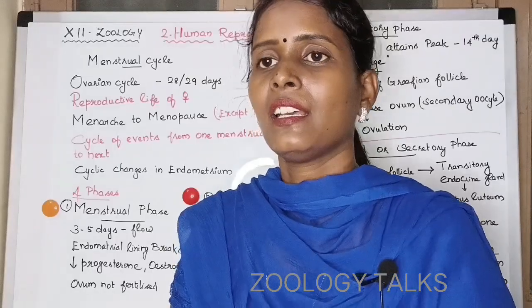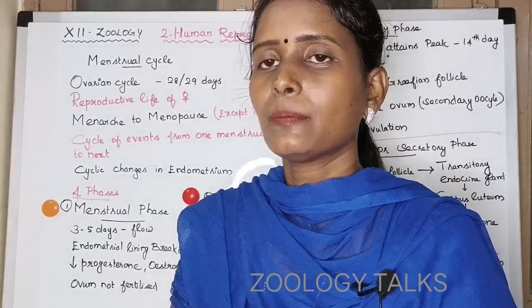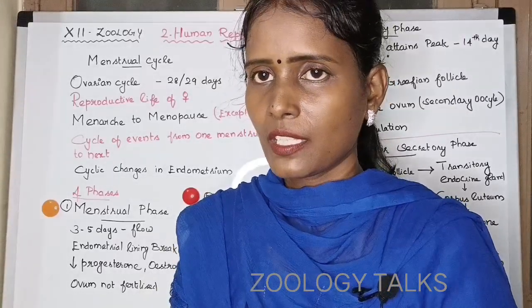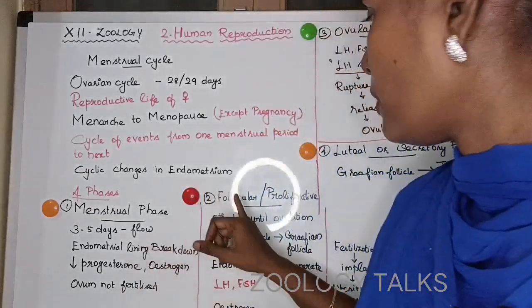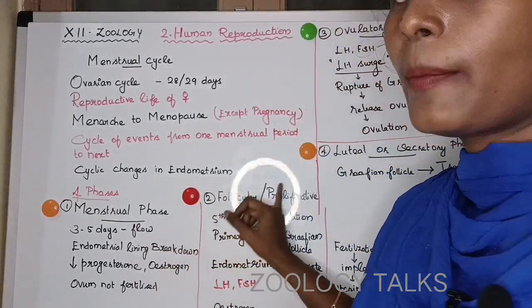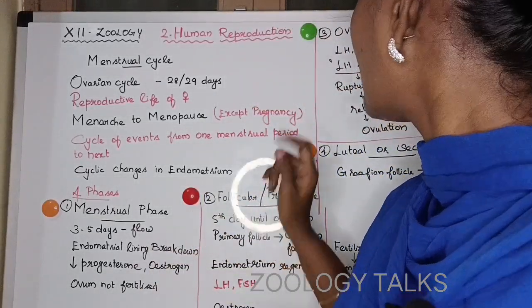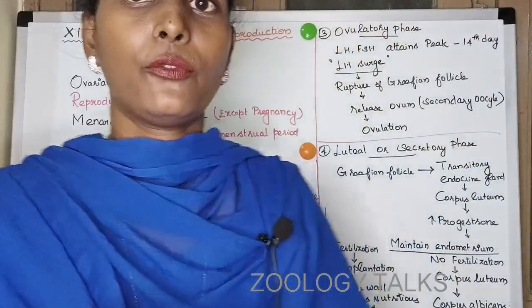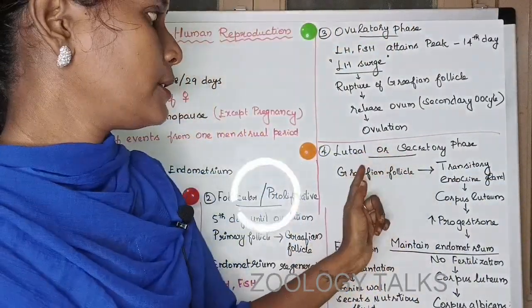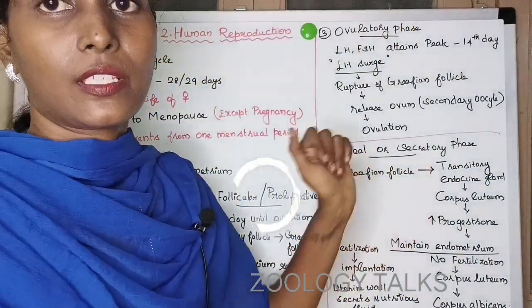There are four phases in the menstrual cycle: one is the menstrual phase, the second is the follicular or proliferative phase, the third is the ovulatory phase, and the final one is the luteal or secretory phase.